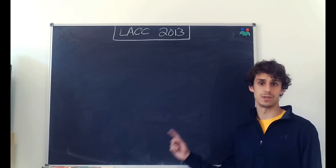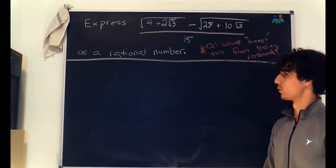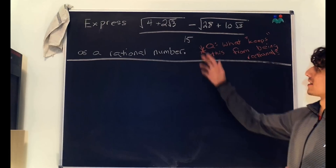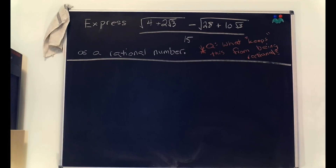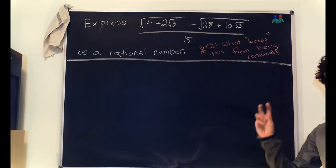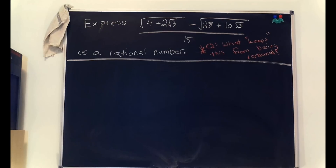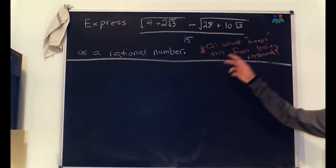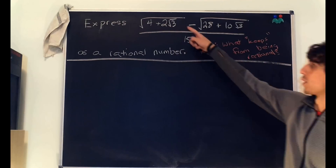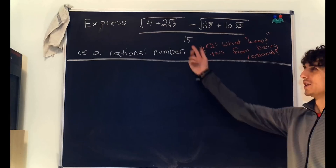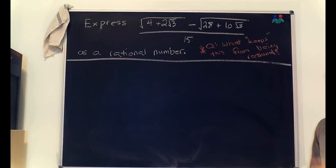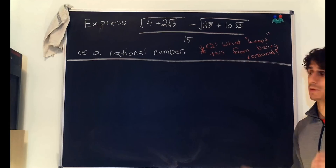So let's get into this problem. I have a nice number puzzle for the channel today. We want to express this long, gnarly number as a rational number. We want to be motivated by this question: what keeps or hinders this number from being rational in the first place? The pretty obvious answer is all these square roots — the square root over this big number here, the square root of 3, and so on. But this 15 in the bottom doesn't really matter; as long as we can rationalize the top, then we're good to go.